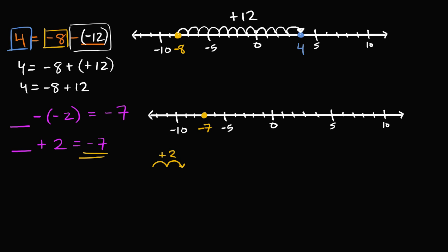I would have to start two to the left of negative seven — one, two. If I start at that number and add two, I end up at negative seven. That number, which is two to the left of negative seven, is negative nine. So negative nine plus two gets you to negative seven. Or you could say negative nine minus negative two, because if you subtract negative two, you move to the right — two to the right — landing at negative seven.